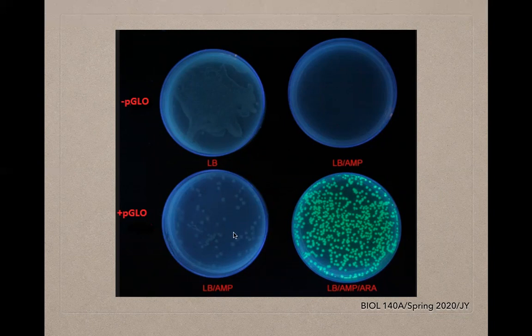On the final plate, you have bacterial growth in the presence of ampicillin, and also fluorescence. This is due to the RSC protein being expressed, which activates GFP — green fluorescent protein. GFP is active here and fluoresces as a green color under ultraviolet light.